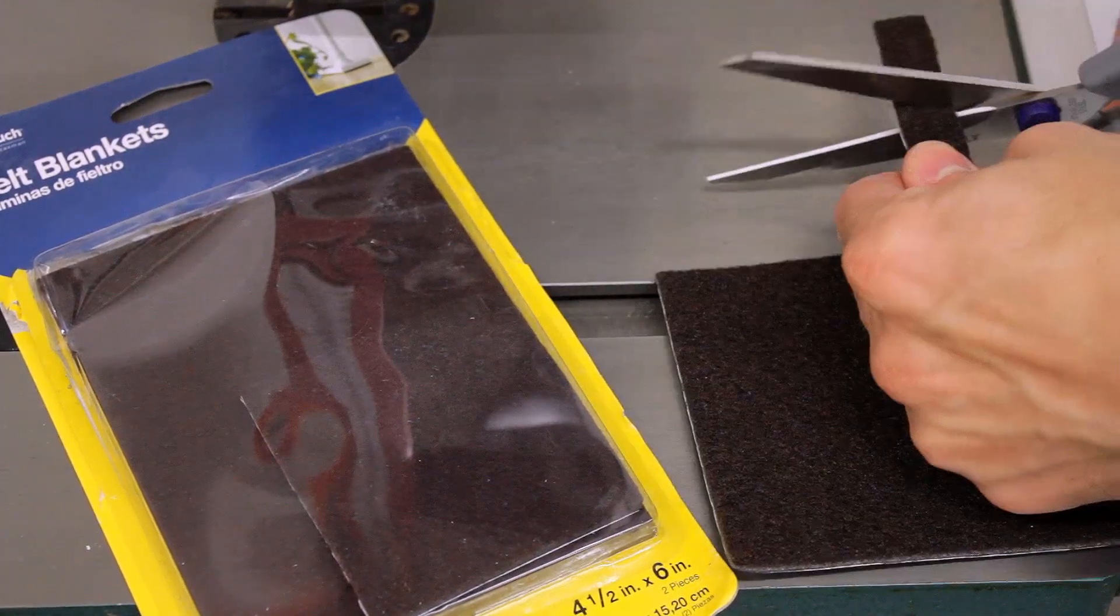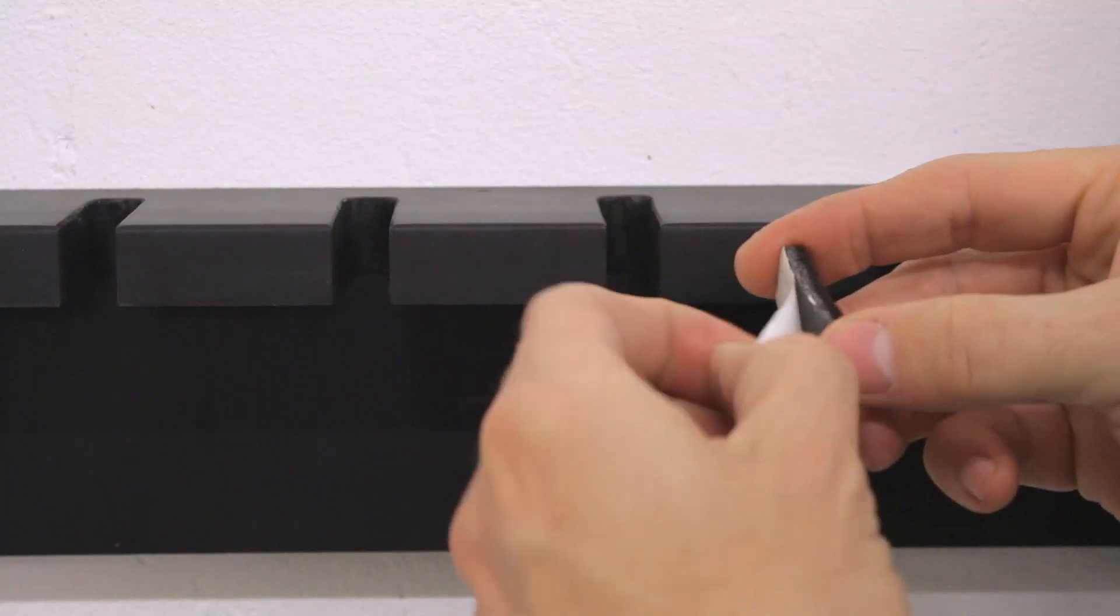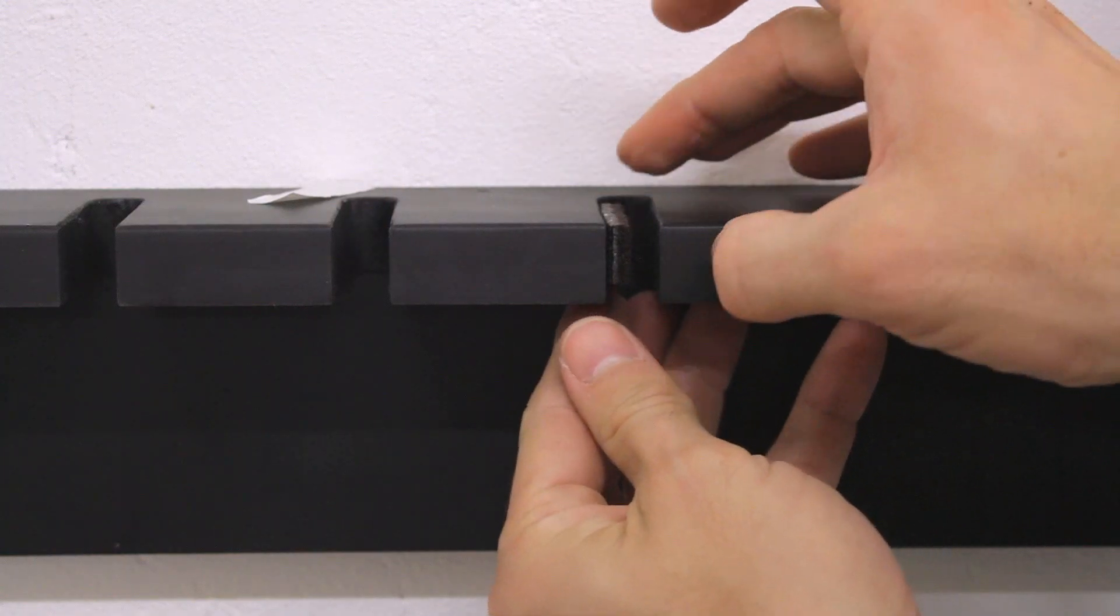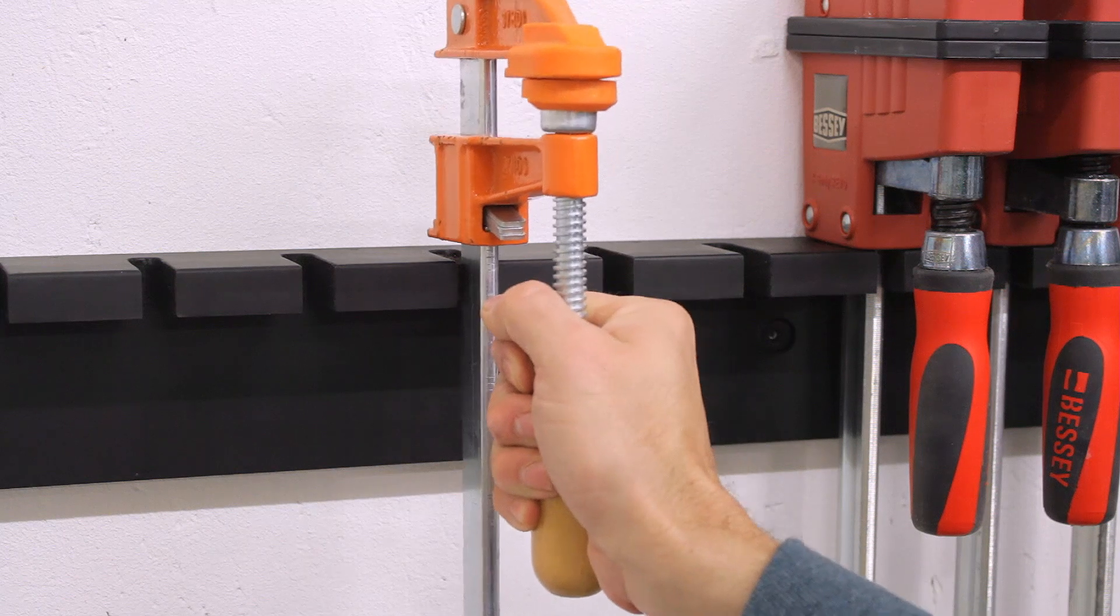Since the bar widths on these clamps were a bit different I oversized the slots a little and added small pieces of felt pads used to protect hardwood floors from furniture.